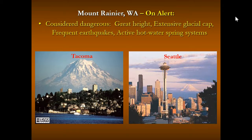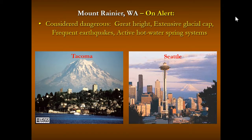Mount Rainier is a major threat for lahars. It's really high, with extensive glacial caps, frequent earthquakes, and active hot water springs — indicating that magma is near the surface. This threatens not only an eruption but devastating lahars afterward. You can see Mount Rainier looming behind Tacoma, Washington, and even visible from Seattle — very close to large populated areas.